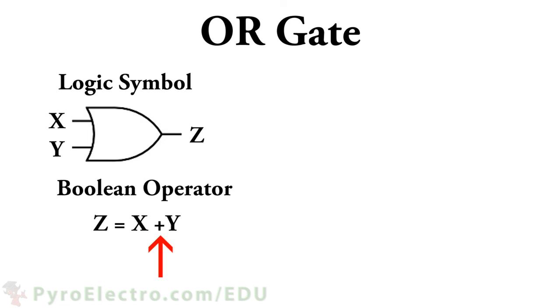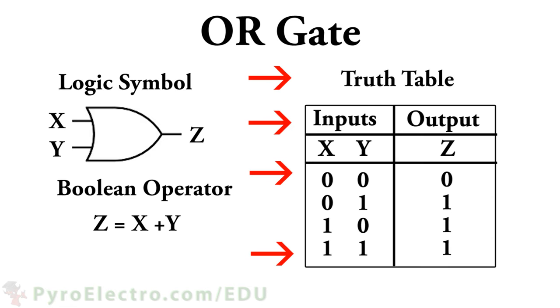Just as with the AND gate, an OR logic gate has a truth table that defines its function. Here, the truth table shows us that when either input signal is a logic 1, the output is a logic 1. Only when both inputs are logic 0 does the output become logic 0.